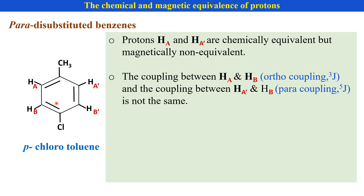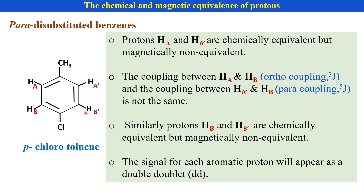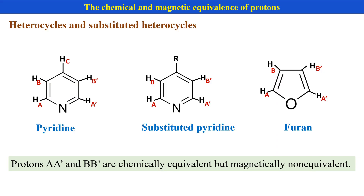Similarly, for HB and HB' protons also, they are chemically equivalent but magnetically non-equivalent. In this case also, HA and HB protons give a double doublet in the spectrum.